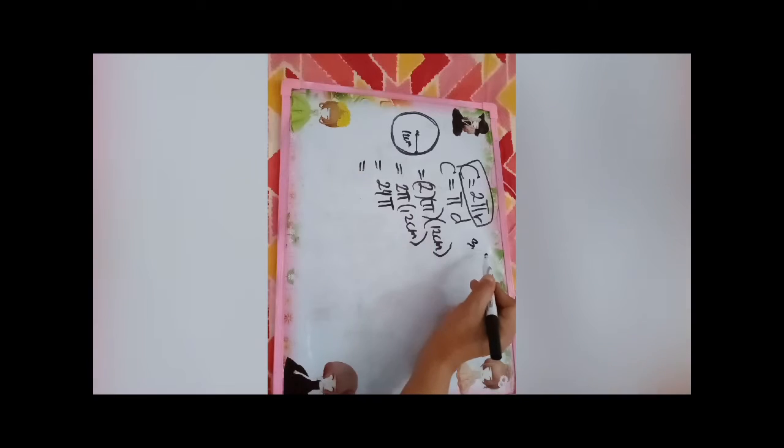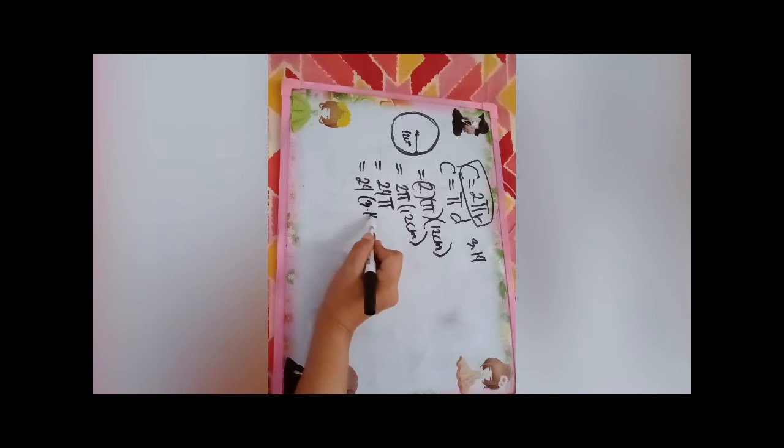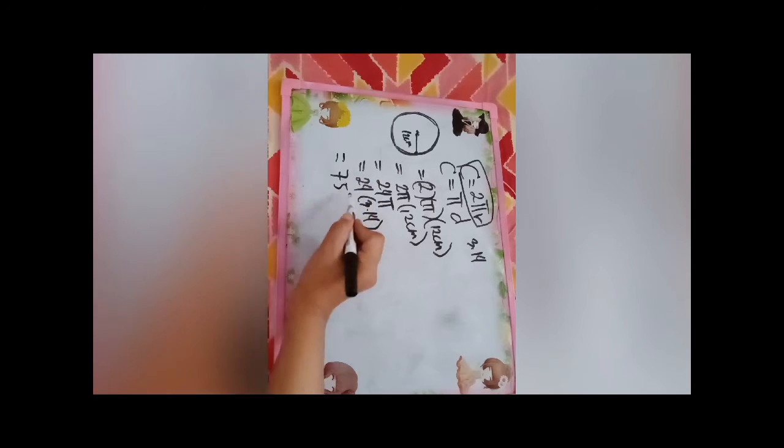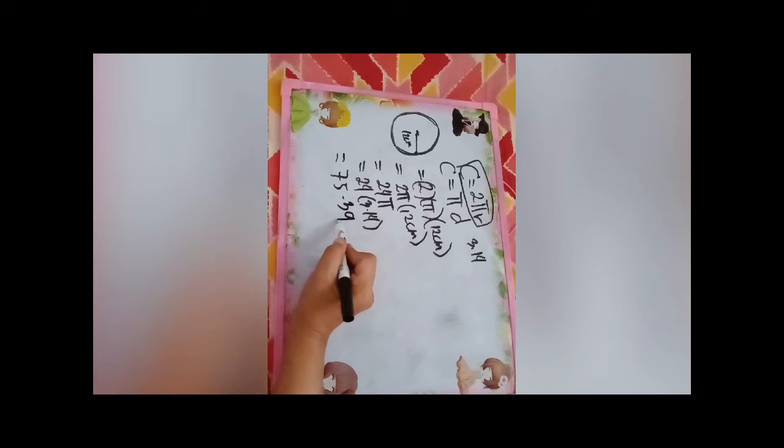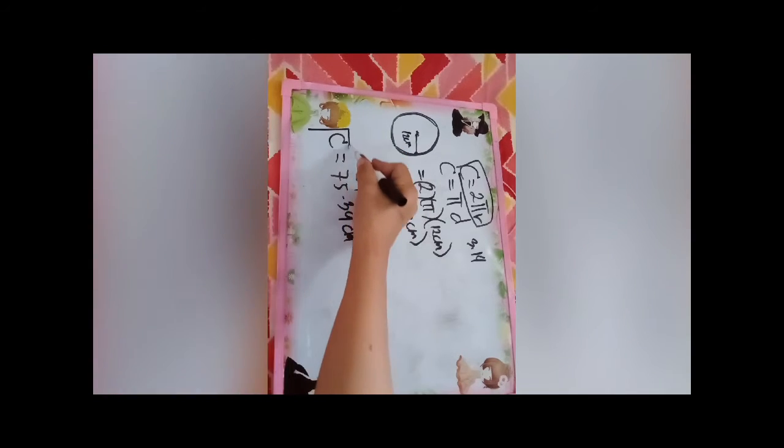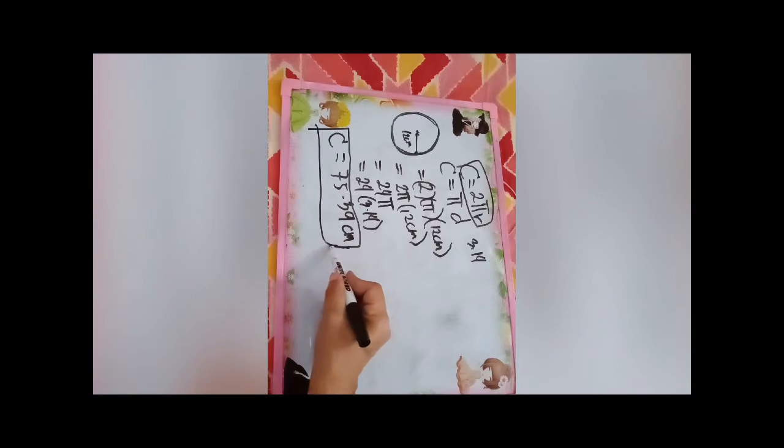So 2 times π equals 2π times 12 cm. 2π times 12 cm equals 24π. So we use 3.14 as π. So 24 times 3.14 equals 75.39. And remember, do not forget to copy the unit cm.